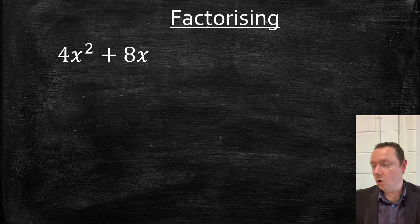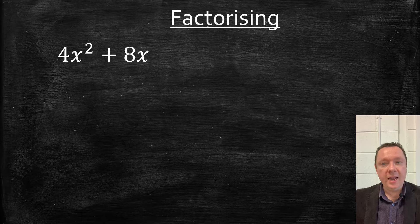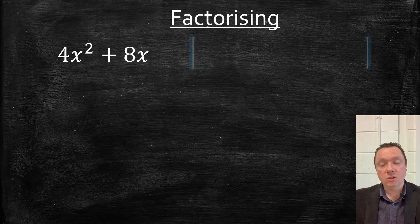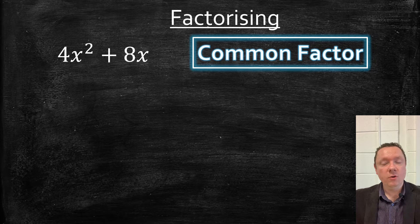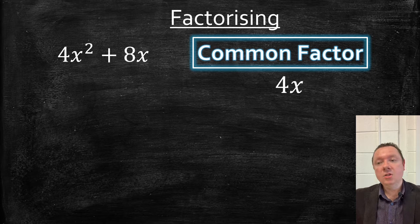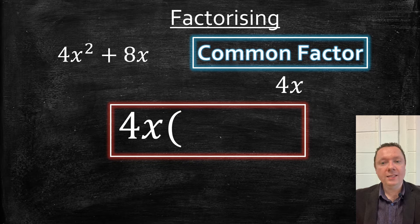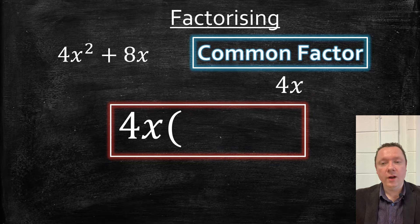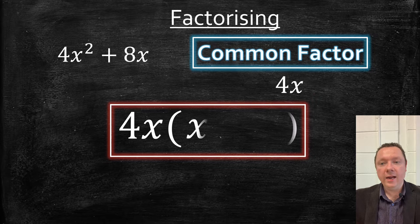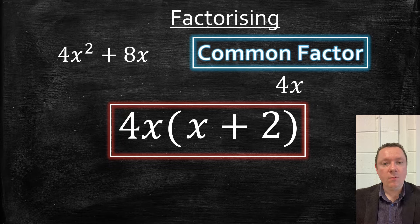Let's get right into it with some common factors. The first question is factorize 4x squared plus 8x. This is a common factor because there's a number and letter that go into both 4x squared and 8x, namely 4x. So 4x is what goes outside the bracket. 4x times x is 4x squared and 4x times 2 is 8x. So it's x add 2 inside the bracket. Nice and simple, that one.